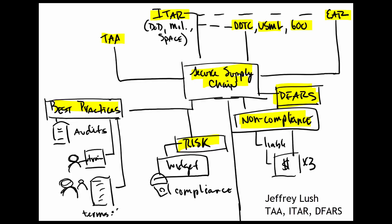If you are a contractor or subcontractor working for the U.S. government, you're going to need to familiarize yourself with some of these terms: TAA, ITAR, EAR, DDTC, Series 600, Secure Supply Chain, DFARS — all the things you see here on the screen. Today we're just going to go over briefly some of these definitions.